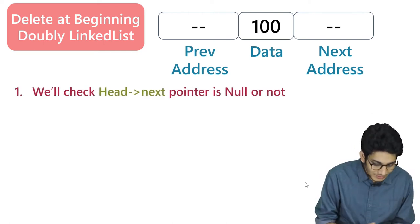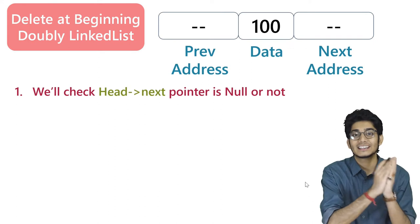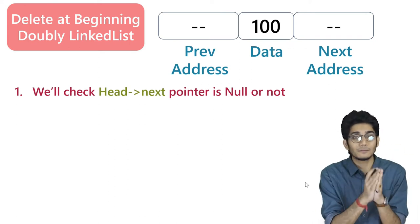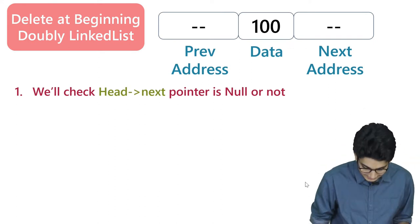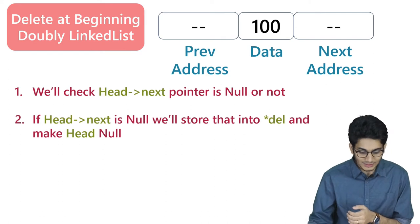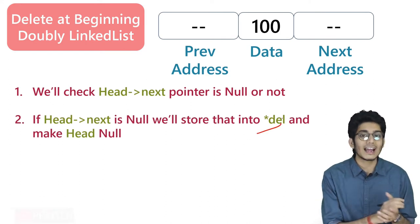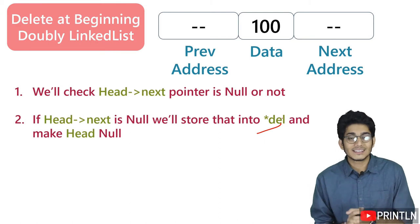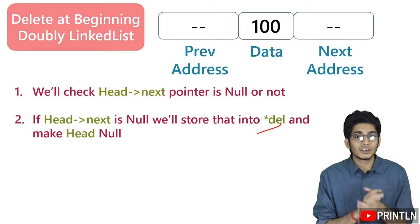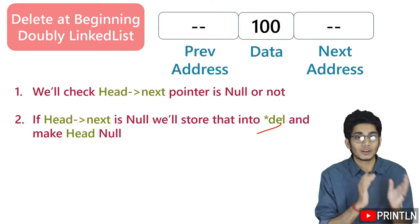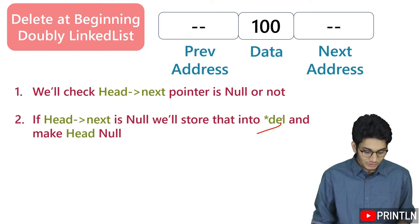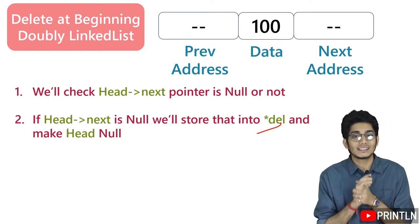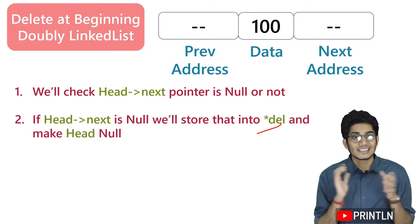First, we have to check whether head next is null or not. If head next is null, we'll store that within del and make head null. We discussed this in our previous video on deleting from the last of a doubly linked list. If we have only one value within our list, the condition is the same.